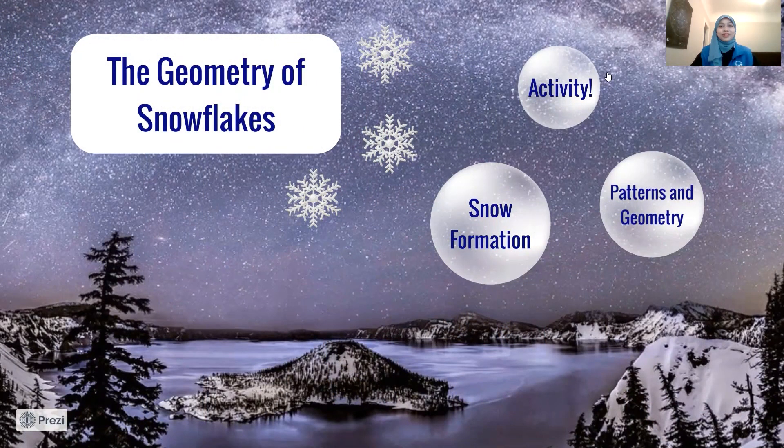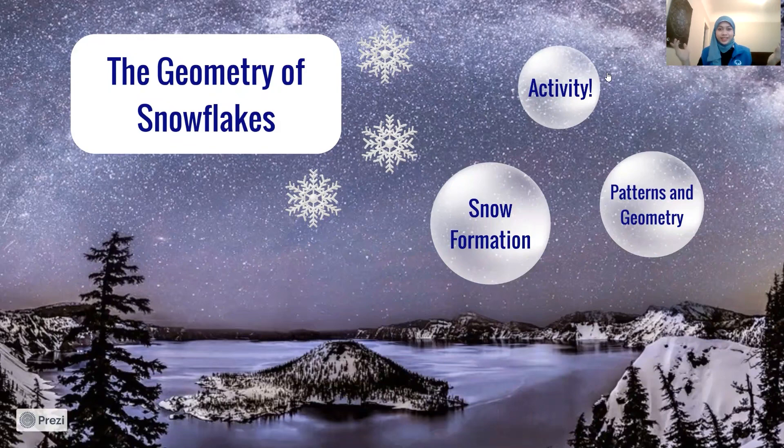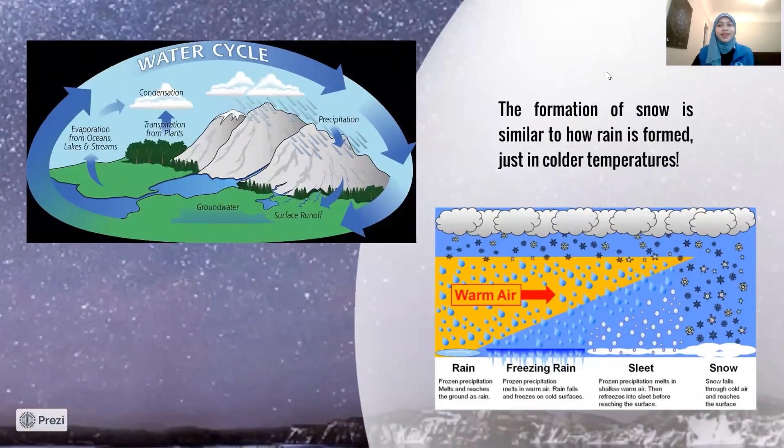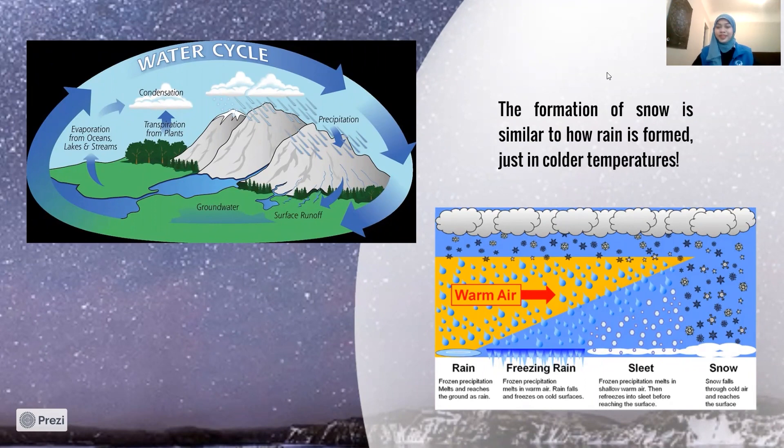Today, let's learn about the geometry of snowflakes. But first, let's explore how snow is formed in the first place. Now the formation of snow is similar to how rain is formed. It just happens in colder temperatures.